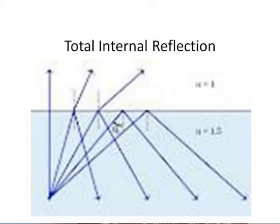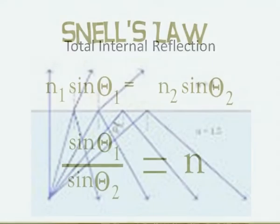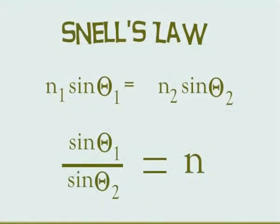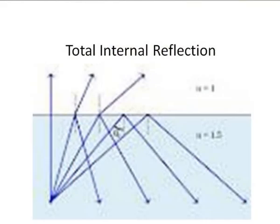Let us recollect the phenomenon of total internal reflection and Snell's law in this context. Let us take two media — air and water. Air is a very rarer medium whose refractive index is nearly equal to that of vacuum, that is 1. Water has a refractive index of around 1.33. Now, when a ray of light travels from a denser medium to a rarer medium, it will be bent away from the normal.